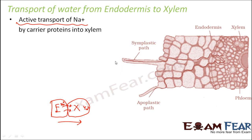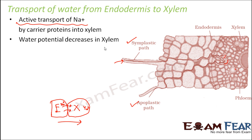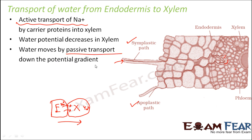Water is first absorbed from the soil by root hairs. From root hairs it can follow either the symplastic pathway, moving through the cytoplasm of cells, or the apoplastic pathway, passing through cell walls, and reaches the endodermis. From there it enters the xylem. Water potential decreases in xylem, so water moves by passive transport down the potential gradient — no external energy is needed. The ions, however, were transported by active transport.